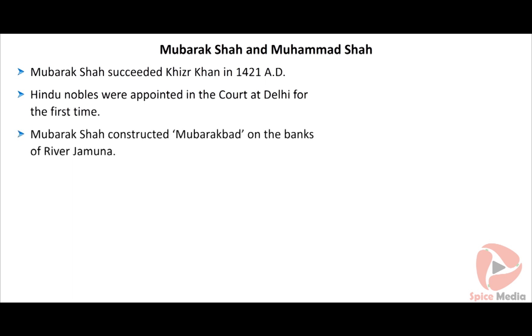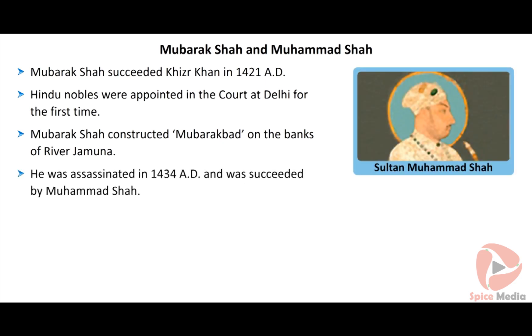Jaunpur, Malwa, Gujarat, Kandesh, Bengal and Deccan were lost during Khizr Khan's rule. Khizr Khan died in 1421 AD and his son Mubarak Shah ascended the throne.